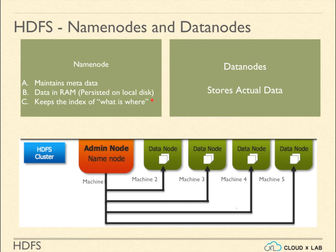Data nodes are the workhorses of the file system. While the name node keeps the index of which block is stored in which data node, data nodes store the actual data. In short, data nodes do not know the name of the file.